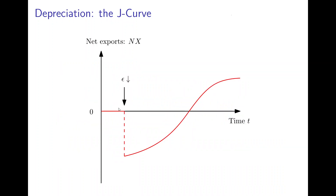We now look at net exports over time when there is a depreciation. Here we have net exports on one axis and time on the other, analyzing what happens over time. At the point the depreciation sets in, we assume net exports are initially zero — trade is balanced — and now epsilon decreases. Initially there will not be an immediate effect of the depreciation on the quantities of exports and imports because they need time to adjust. However, the price effect is immediate. So in the short run the Marshall-Lerner condition will definitely be violated, because only the price effect is present; the quantity effects are not present in the short run. Only over time do the quantity effects emerge, and if the Marshall-Lerner condition is fulfilled in the new equilibrium, net exports will rise into positive territory and we will have a trade surplus.